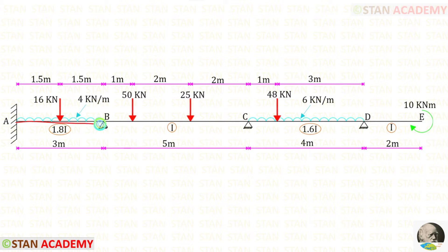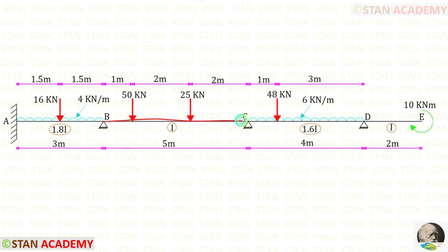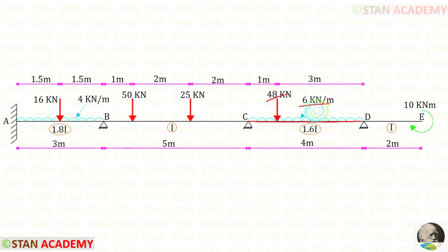In the span AB we have a point load and uniformly distributed load. In the span BC there are two point loads. In the span CD there is a point load and a uniformly distributed load. In the overhanging part DE, at point E, we have a concentrated moment of 10 kNm acting in the clockwise direction.